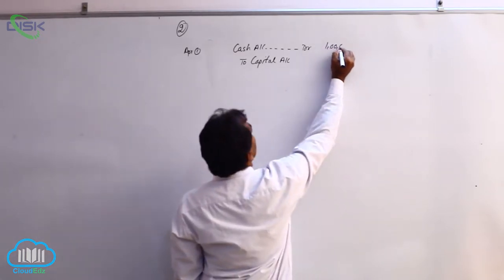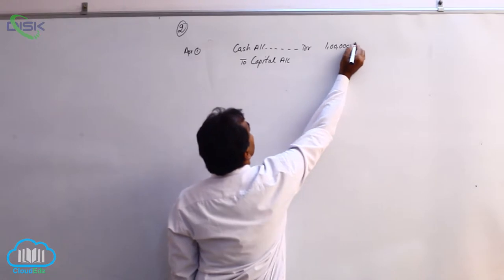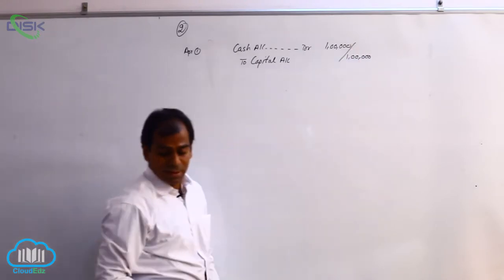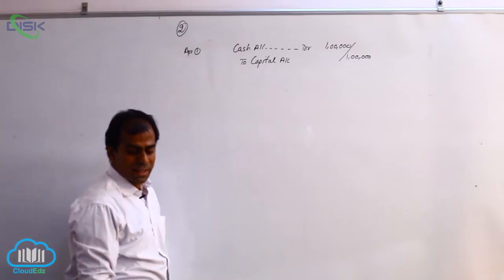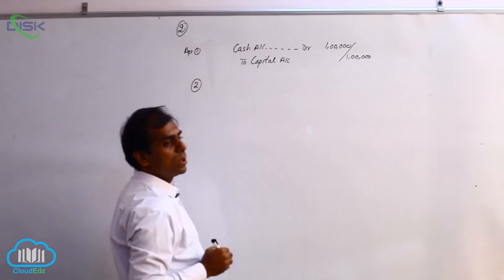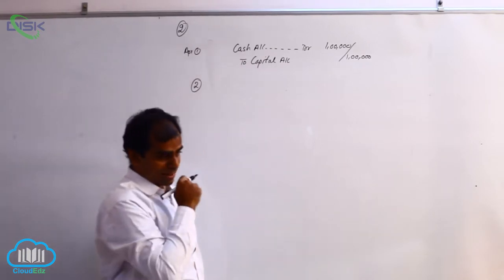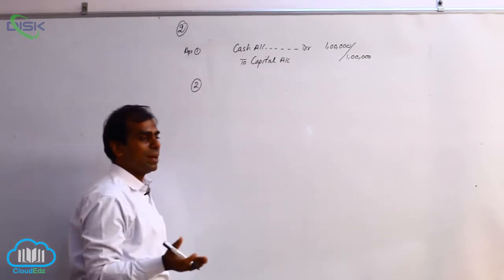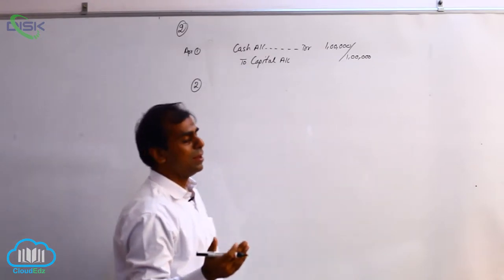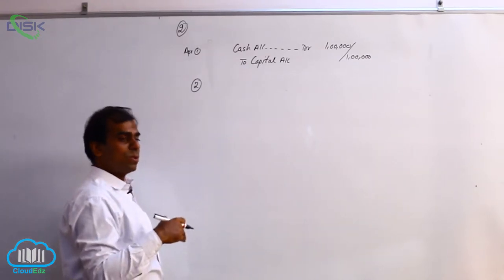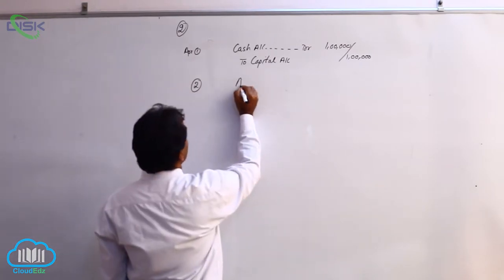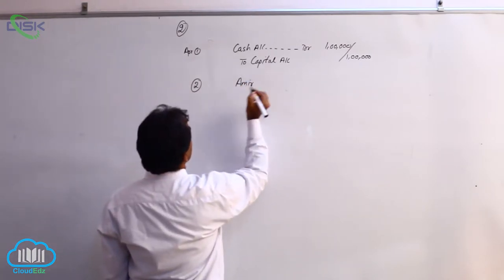The journal entry is: cash account debit to capital account, the amount being one lakh. The narration would be 'being business commenced.' The next transaction is on the second — goods sold to Amer. In the sale of goods, goods are going out, so goods are a real account and we will be crediting the goods, which we call sales.